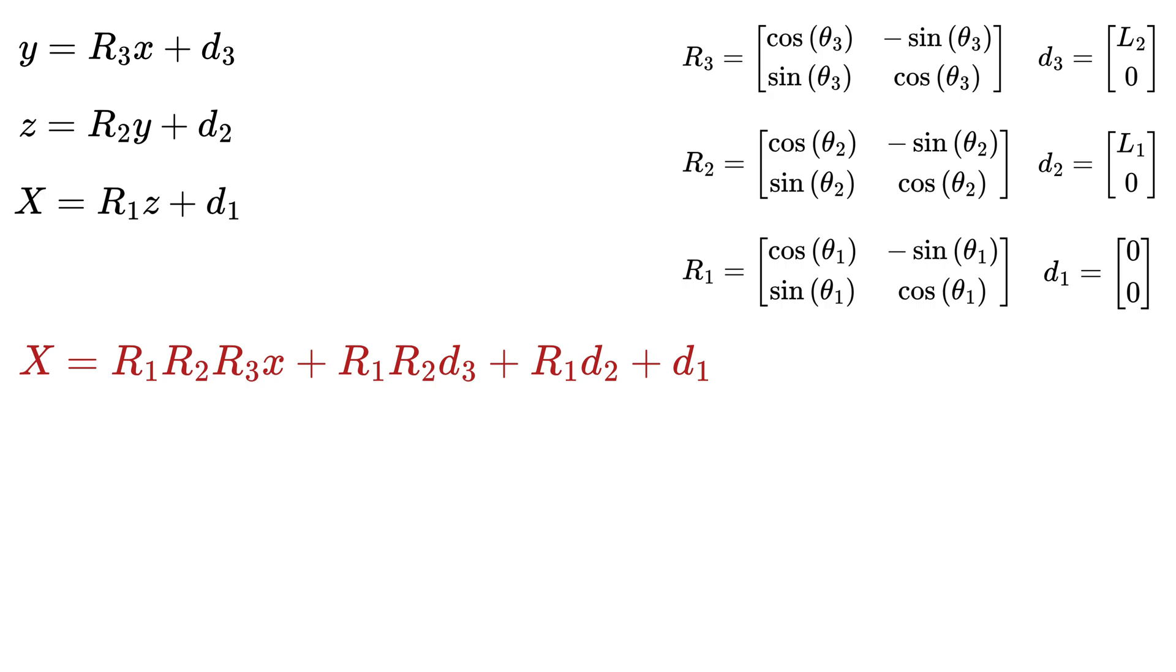So now, we'll rewrite each individual step from small x to y, then y to z, and finally z to big X, using the homogeneous transformation matrices T1, T2, and T3.